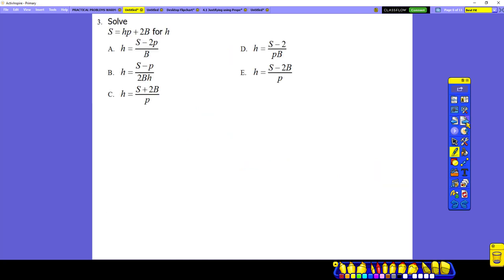Number three. Solving for literal equation. So if we have s equals hp plus 2b, we are trying to solve for h. If you want, draw a line to indicate the left and right side of our equation. We need to solve for h. So if you just cover this one, I need to get rid of 2b. How can I remove this?